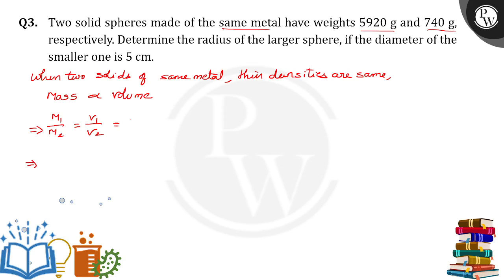590 divided by 740, mass by mass is equal to volume of the spheres. Volume of the spheres: 4 by 3 pi r1 cube by 4 by 3 pi r2 cube.